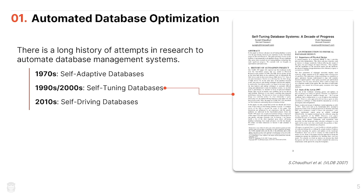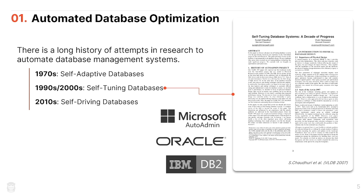In the 1990s and 2000s, database vendors got involved. There's a 2007 paper from Microsoft Research covering a ten-year history of their auto-admin work — index tuning, query tuning, partitioning keys. Microsoft, Oracle, IBM DB2, and Teradata all had similar tools. The key thing about this work from the 2000s is that these were all recommendation tools for DBAs: you'd run them and they'd spit out recommendations, then the human decided whether to apply them.